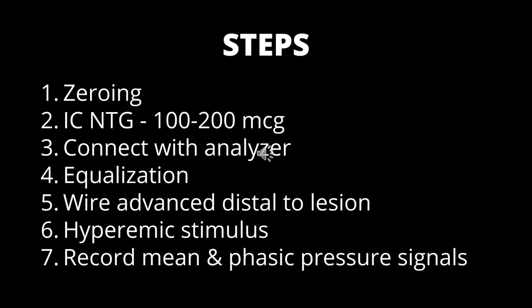FFR is usually measured using a 6-French guiding catheter. The first step is giving intracoronary nitroglycerin at a dose of 100 to 200 micrograms before the pressure guide wire is advanced into the coronary artery. The pressure sensor in the pressure guide wire is located 3 centimeters from the tip. The sensor of the pressure guide wire is introduced and positioned at the tip of the guiding catheter where catheter and wire pressures are equalized.